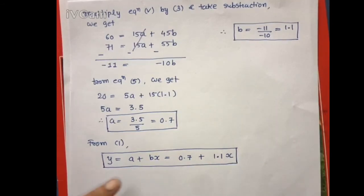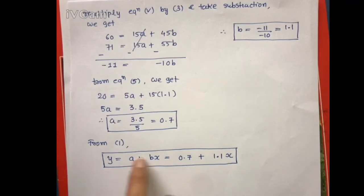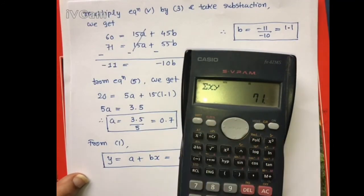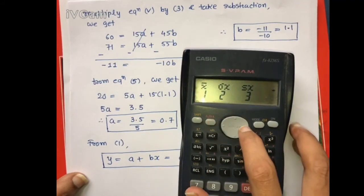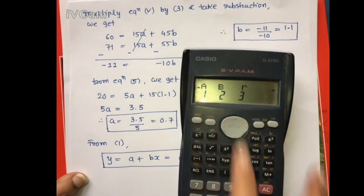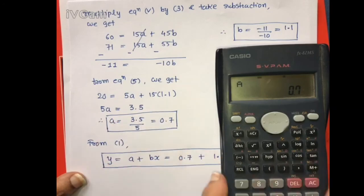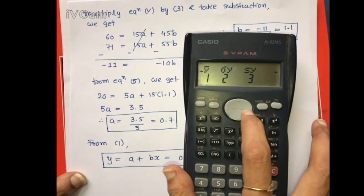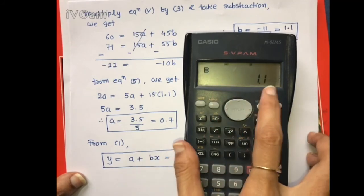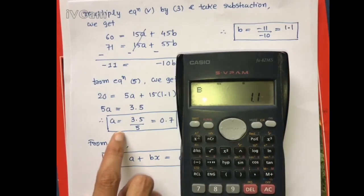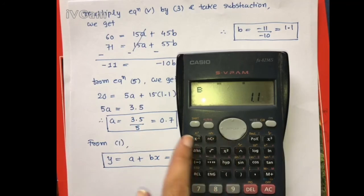Now, by using the calculator, we can verify whether the values of a and b are right or wrong. Since we already have the data fitted, use the key Shift → Regression. Press 1 for a, and we get 0.7. Press 2 for b, and we get 1.1 — confirming our earlier calculations.